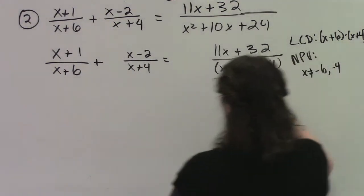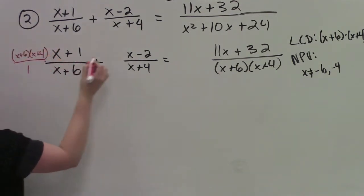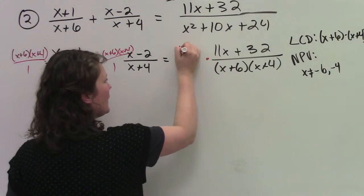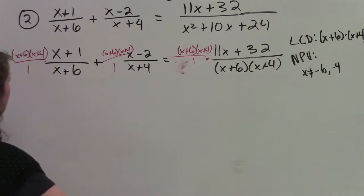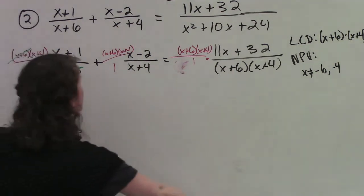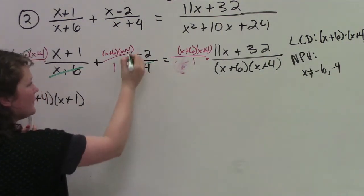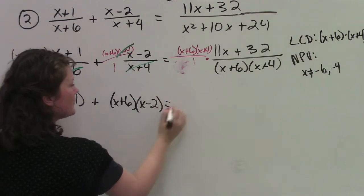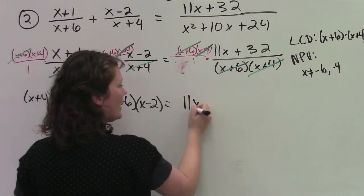Now what I want to do is multiply all three of these terms by the lowest common denominator: x plus 6, x plus 4, times it by x plus 6, x plus 4, over 1. Now, what can I cancel out with here? x plus 6 can be canceled with the x plus 6. So we're left with x plus 4 times x plus 1. I can cancel out this x plus 4 with this x plus 4. So then I'm left with plus x plus 6 times x minus 2 equals... x plus 6 cancels with x plus 6, x plus 4 cancels with x plus 4. So then we're left with 11x plus 32.